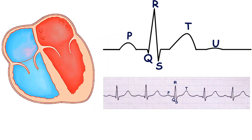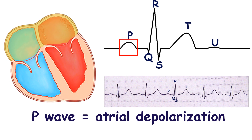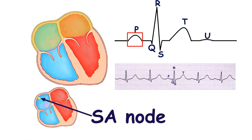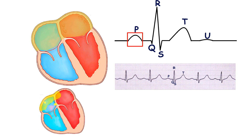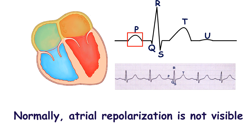The P wave reflects the atrial depolarization. Normally, impulses originate from pacemaker cells of the sinoatrial node and are conducted to the right and left atria. The atrial repolarization is not visible on ECG in healthy people.